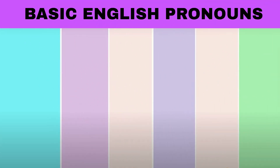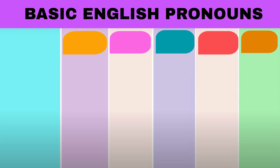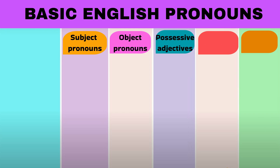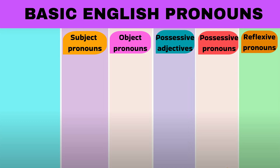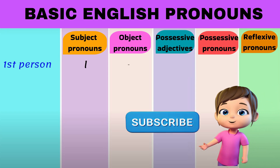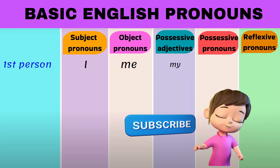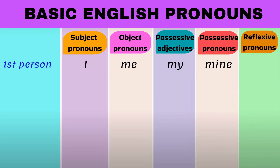English pronouns are categorized into: Subject pronouns, Object pronouns, Possessive adjectives, Possessive pronouns, and Reflexive pronouns. For the first person singular: I, Me, My, Mine, Myself.